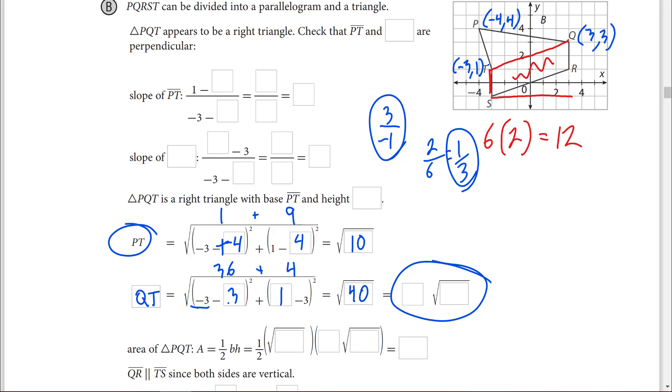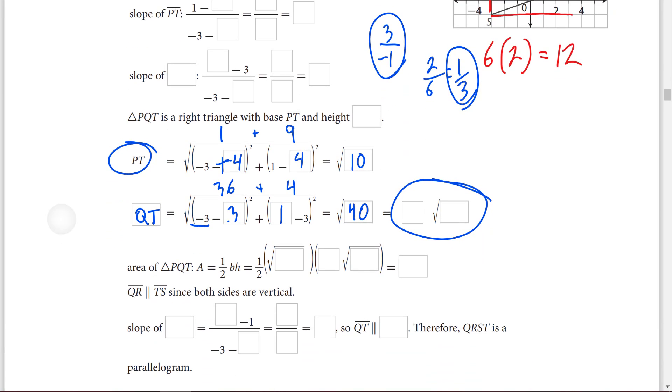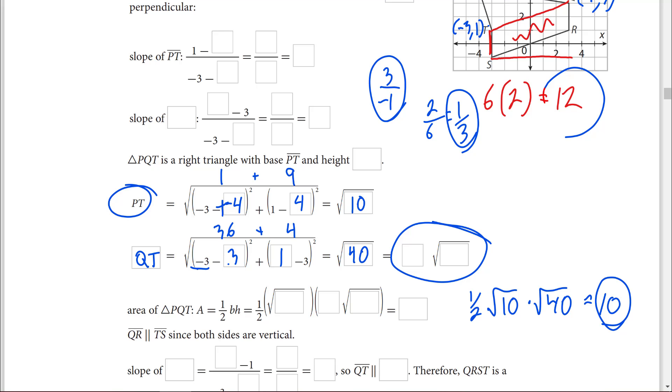Again, we'll work on simplifying here at a later date later this week. So for now, we're just going to multiply those together in our calculator. And 1 half times the square root of 10 times the square root of 40 is going to give me 10. So my final answer is I have a triangle with an area of 10 and a parallelogram with an area of 12.